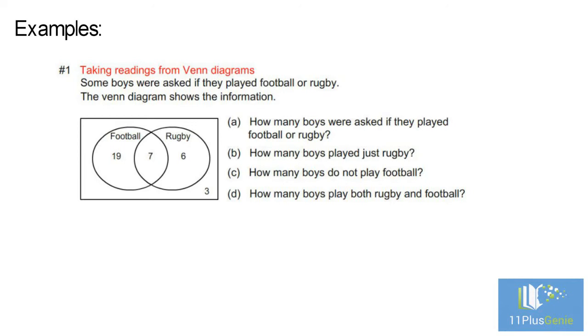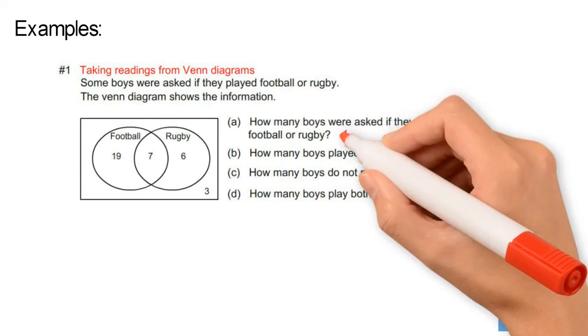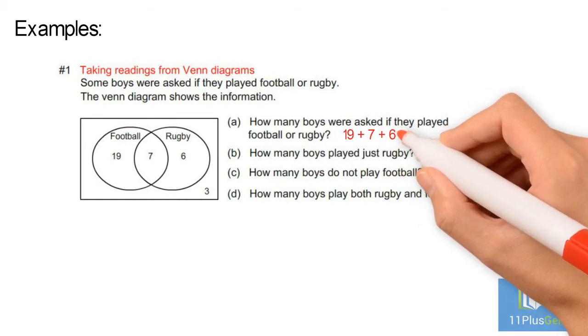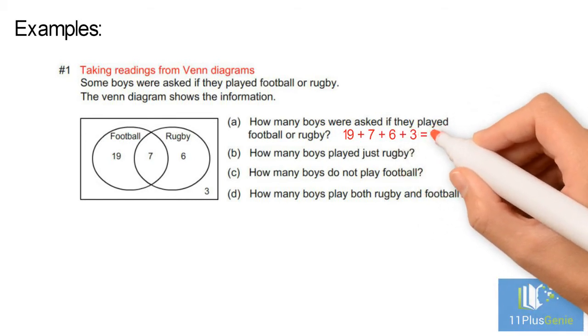A: How many boys were asked if they played football or rugby? This is all the boys in the diagram. 19 add 7 add 6 add 3, which equals 35.